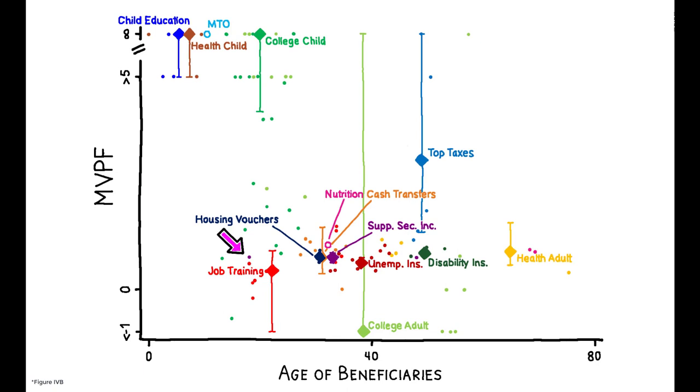As a case in point, the authors find relatively low MVPFs for transfers to disabled children. Nonetheless, these policies may be welfare-enhancing if supporting this population is a societal priority.